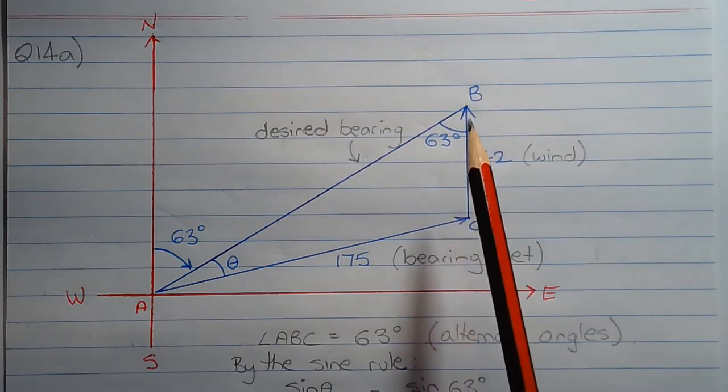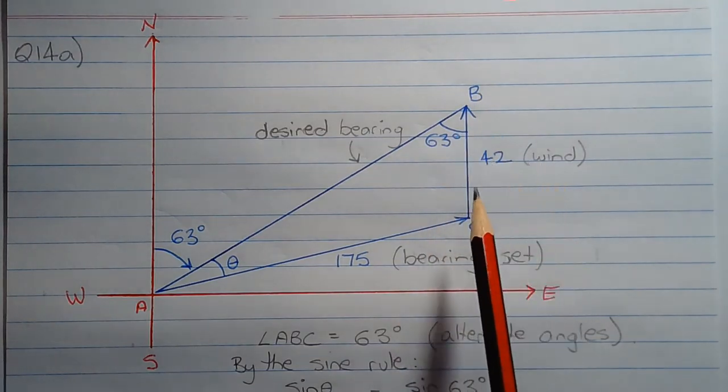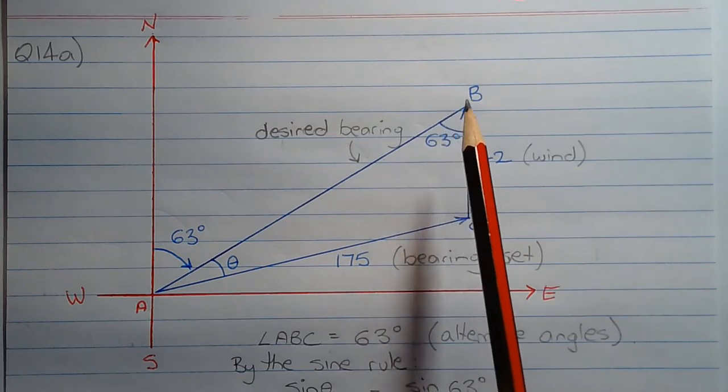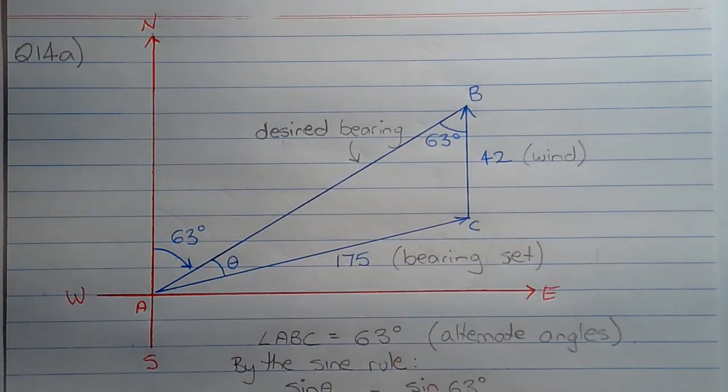Vector CB represents the wind from the south at 42 km per hour which acts on the plane in such a way as to push the plane or push the direction of the plane toward north.